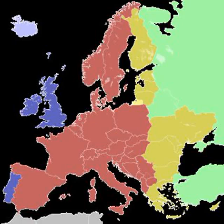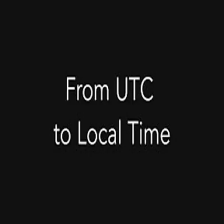Coordinated Universal Time, or UTC, is the primary time standard by which the world regulates clocks and time. It is within about one second of mean solar time at zero degrees longitude and is not adjusted for daylight saving time. It is effectively a successor to Greenwich Mean Time.